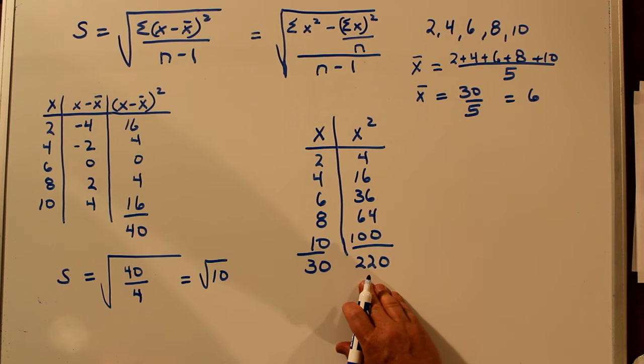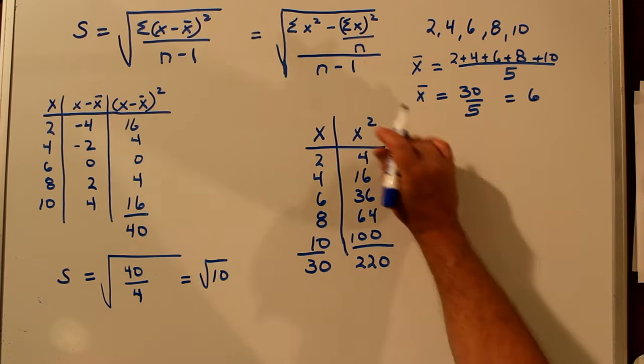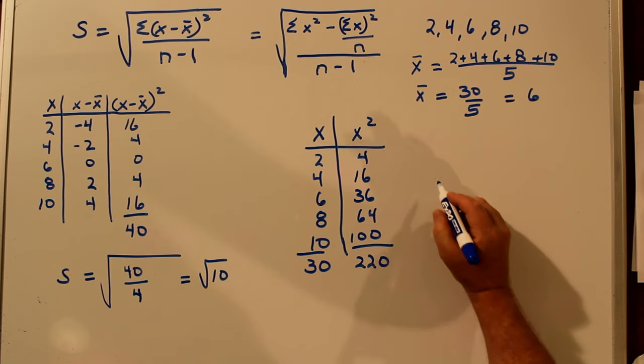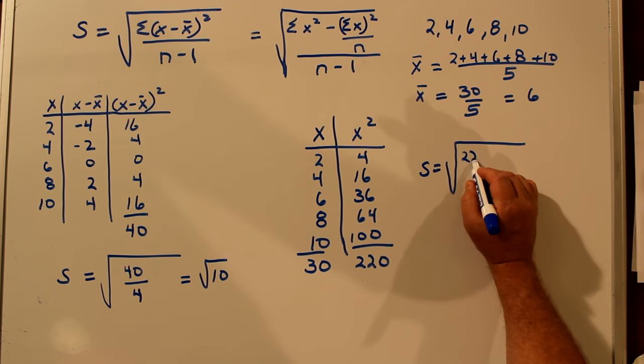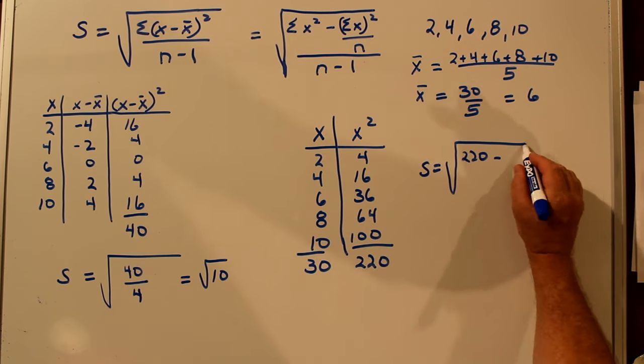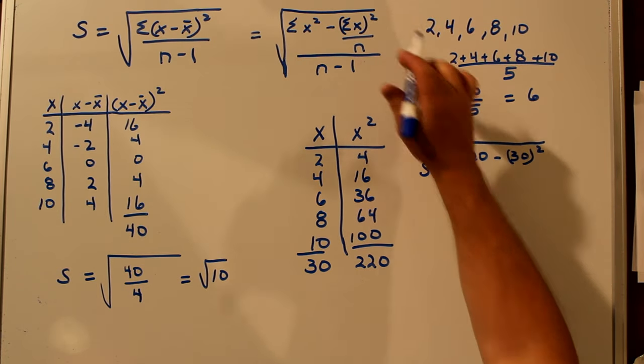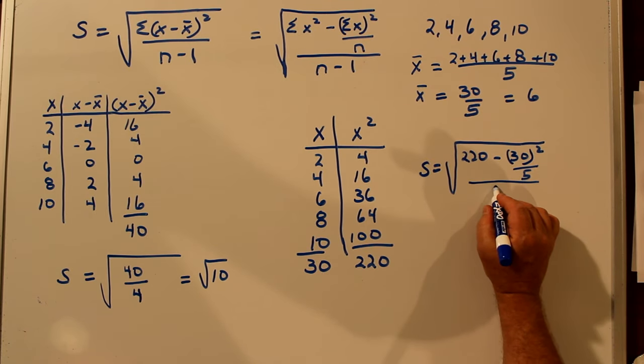So knowing these two sums and n, we can find the standard deviation. So we have the sum of X squared. The sum of X squared is 220. So let's make our radical sign. Sum of X squared is 220 minus the sum of the X's squared. That's 30 squared divided by n, which is 5, divided by n minus 1, which is 4. And it's all under the radical.